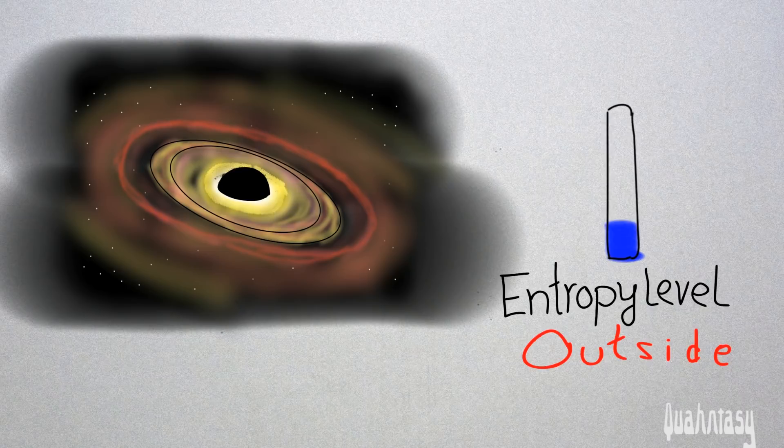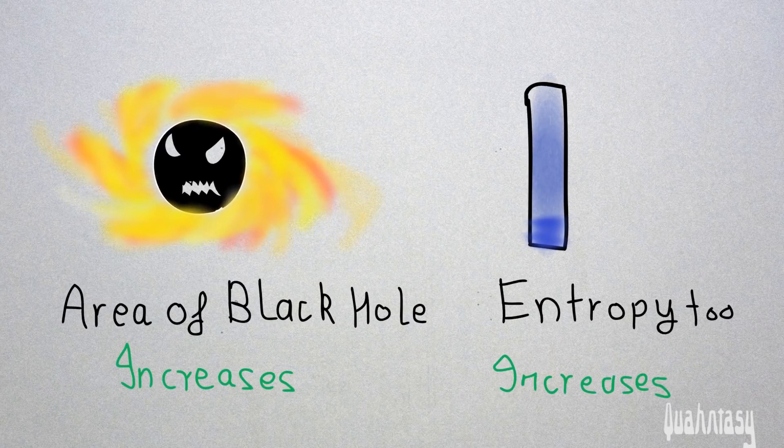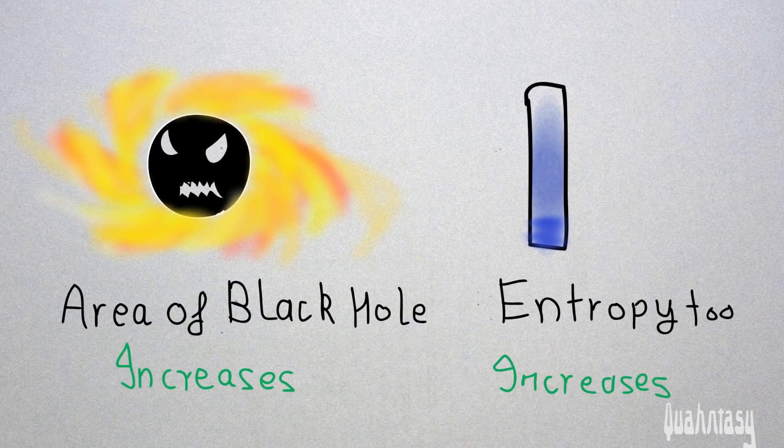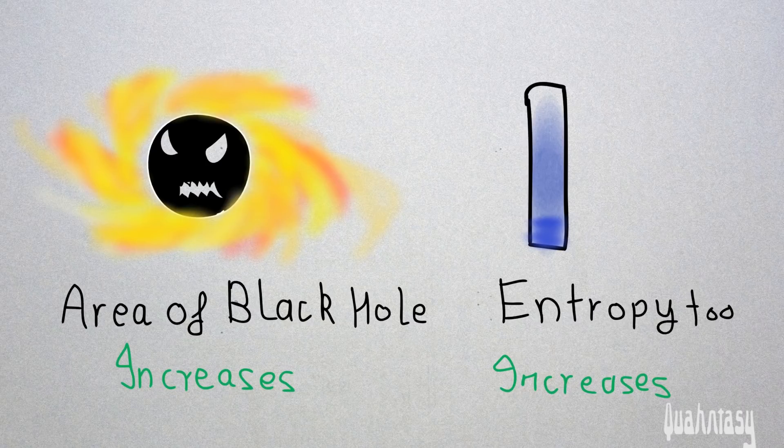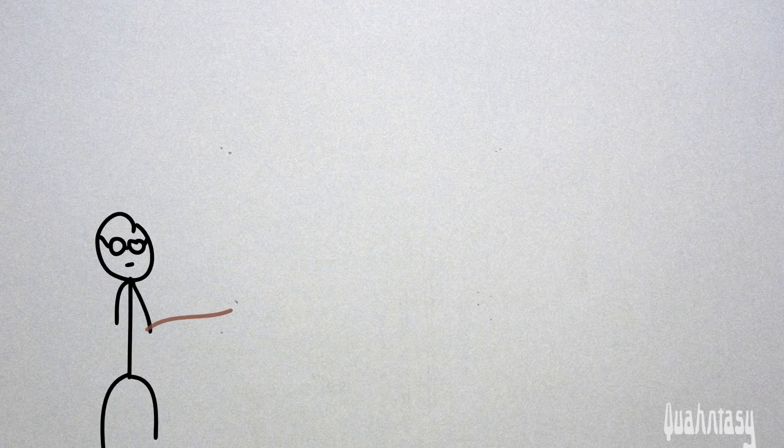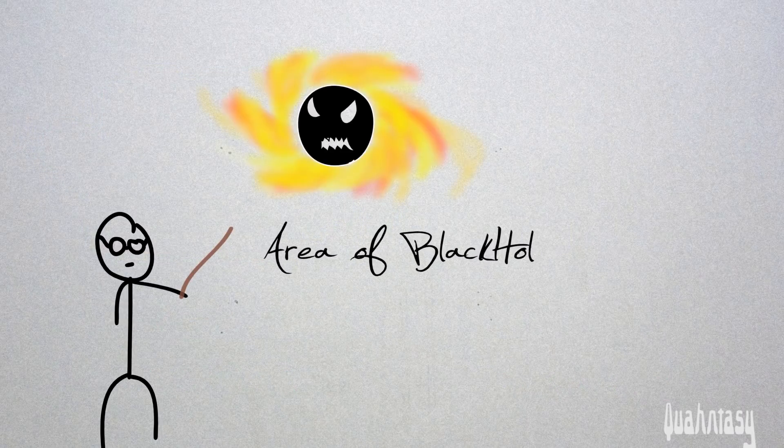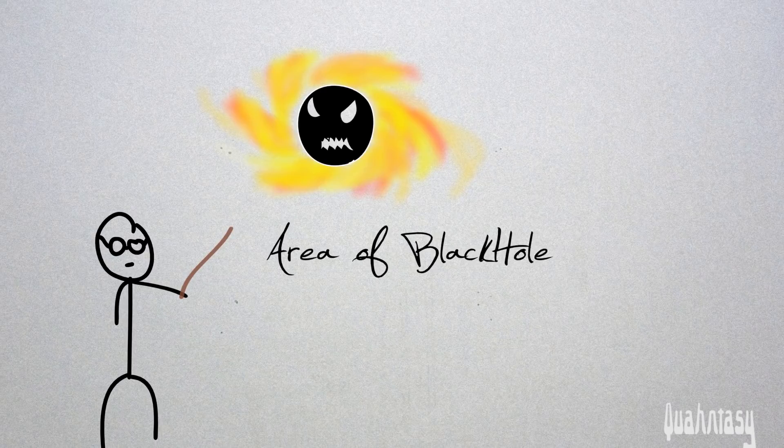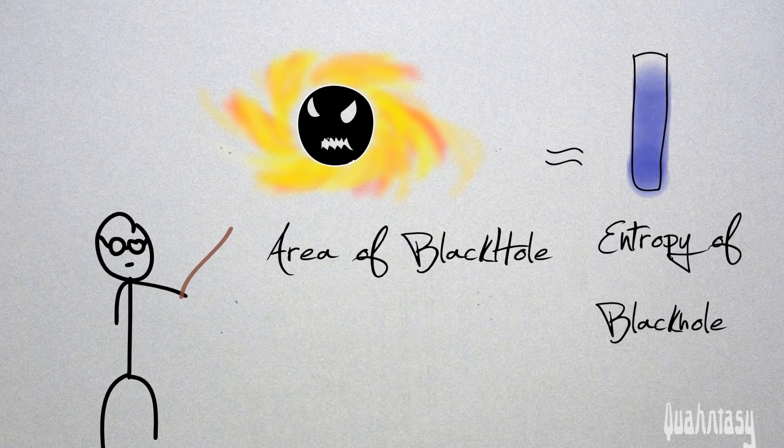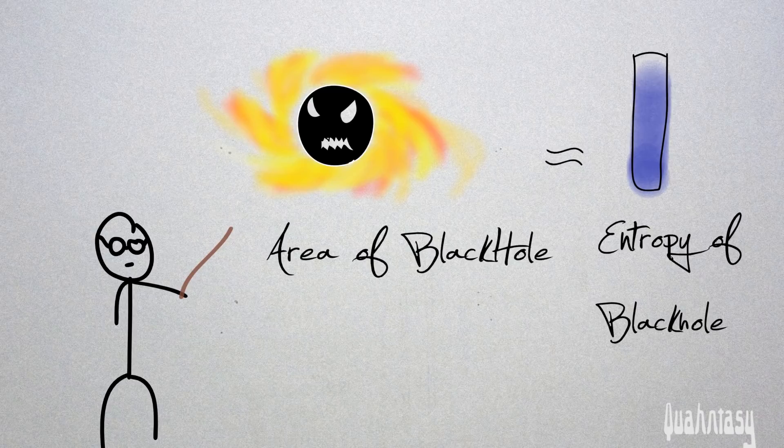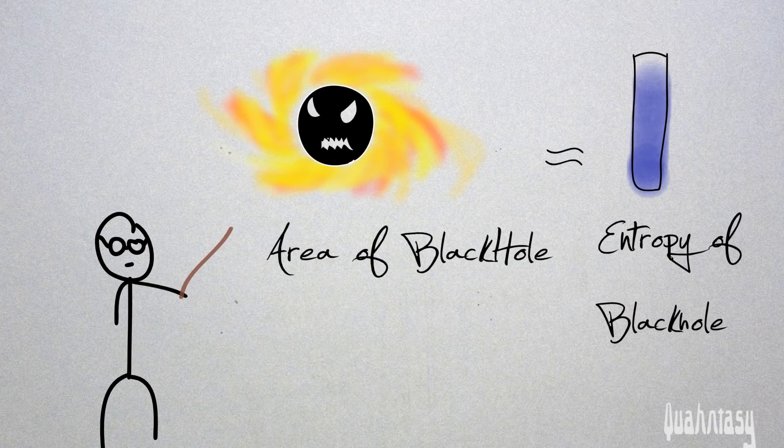Because of the similarity of non-decreasing behavior between entropy and area of the black hole, a research student named Jacob Beckenstein suggested that the area of the event horizon was a measure of the entropy of the black hole. This suggestion seems to prevent the second law of thermodynamics from being violated in most situations.